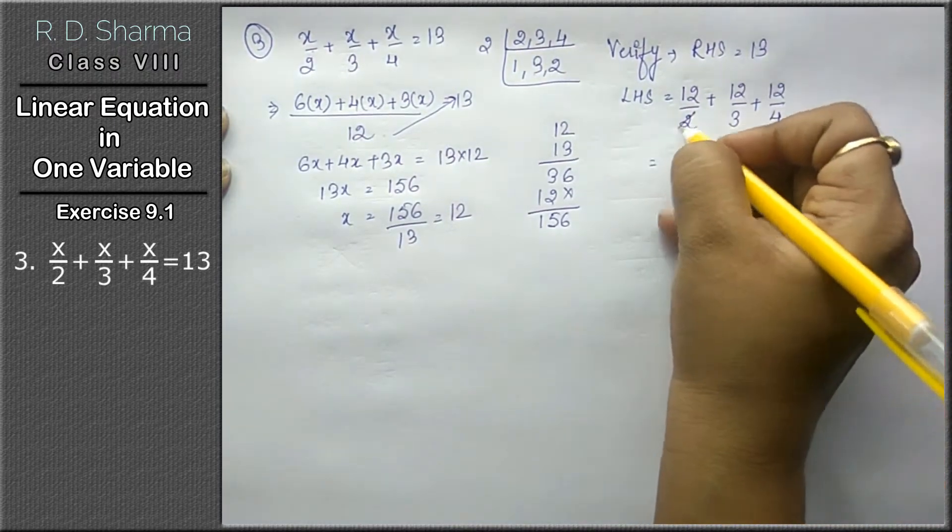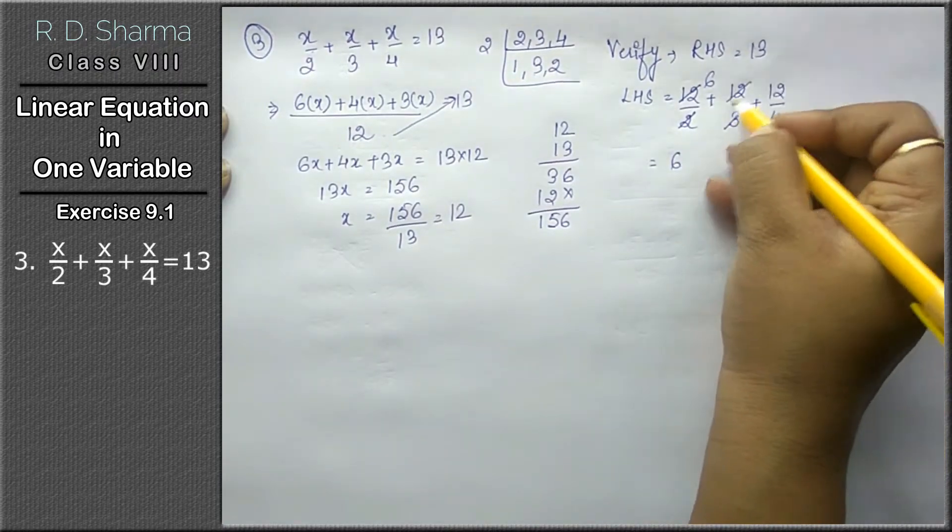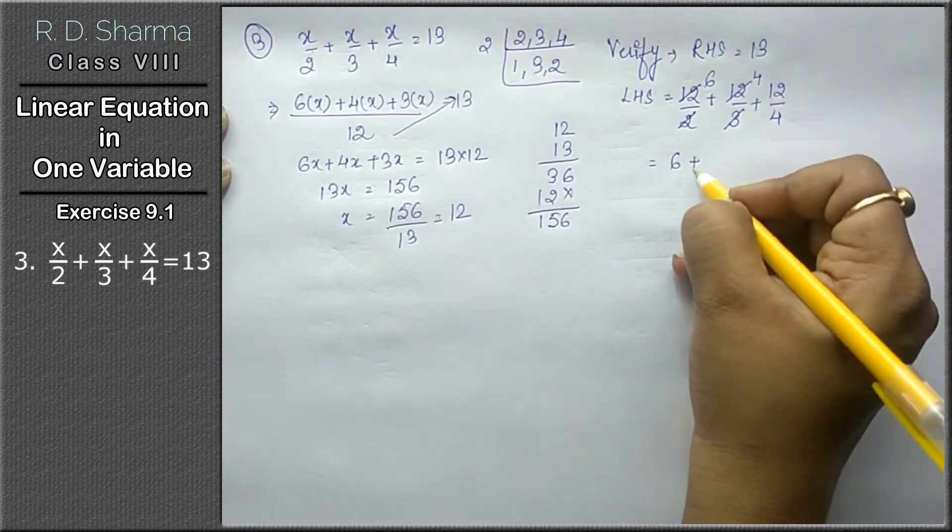Now 2 into 6 is 12, so 12 upon 2 is 6. 3 into 4 is 12, so 12 upon 3 is 4. Plus 4.